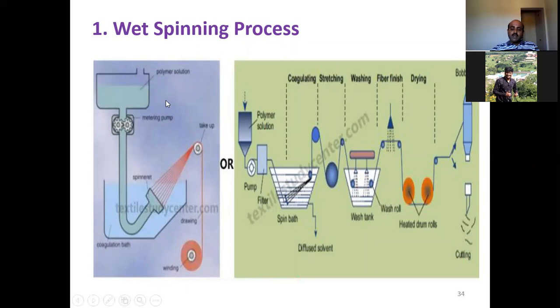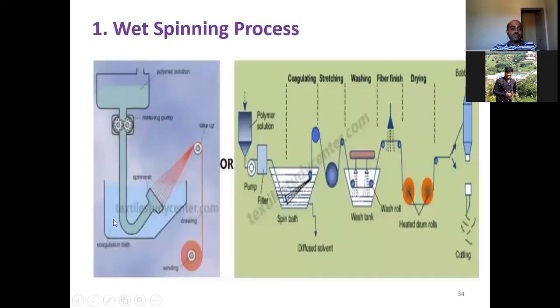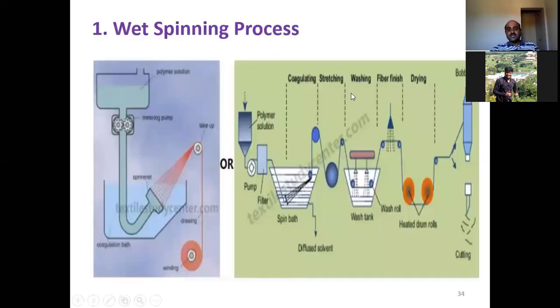In wet spinning, a non-volatile solvent is used to convert the raw material into a solution. The solvent is extruded through the spinneret, either by washing it out or by chemical reaction between the polymer solution and the reagent in the spinning bath. After extrusion, the solvent is removed in a liquid coagulation medium.